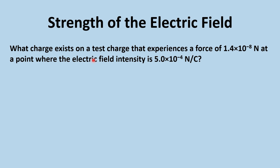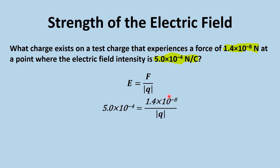Another exercise: what charge exists on a test charge that experiences a force of 1.4 newtons at a point where the electric field intensity is a given value? Here the electric field and the force are both given; we need to find the charge. Using E = F/Q and solving for Q, we get Q = 2.8 × 10⁻⁵ coulombs. Since no directions are given, we cannot determine the polarity of this charge.